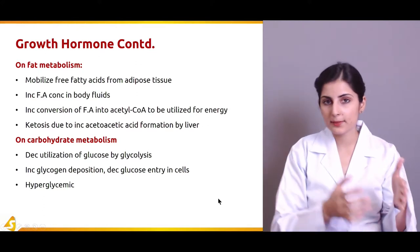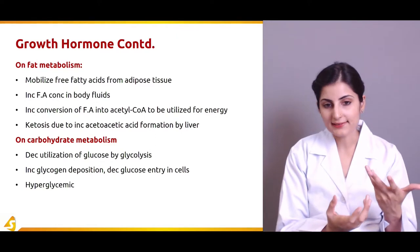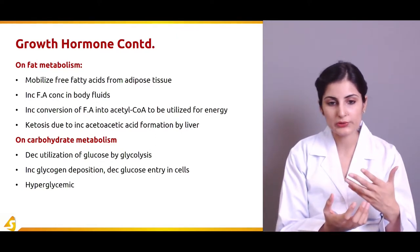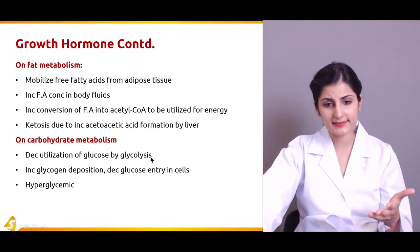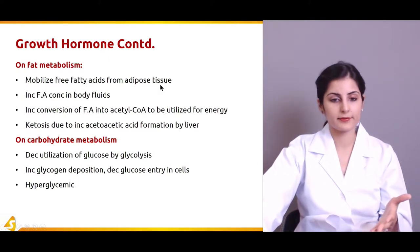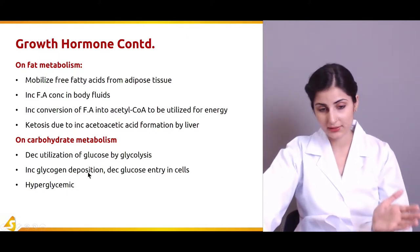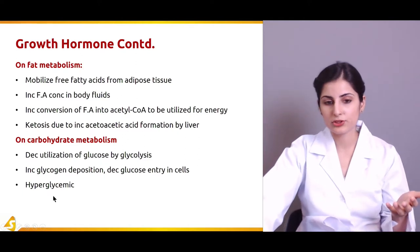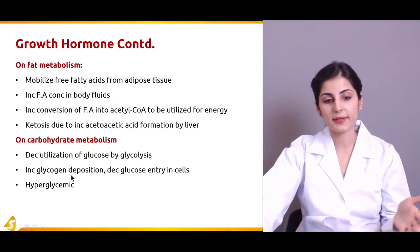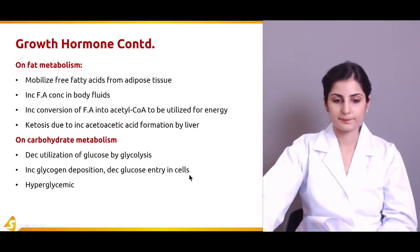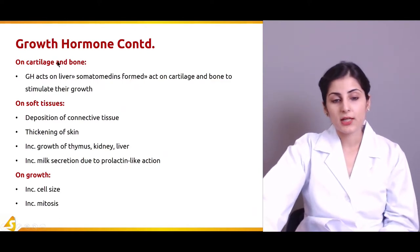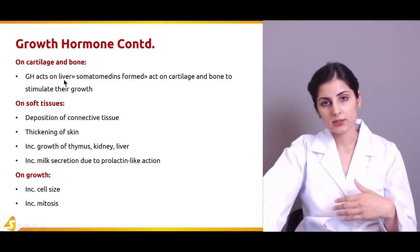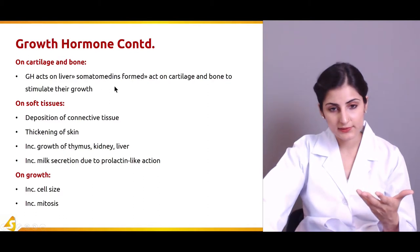Growth hormone increases protein synthesis, mobilizes fatty acids from adipose tissue, and decreases the utilization of glucose by glycolysis. On carbohydrate metabolism, it has a hyperglycemic effect — it increases glycogen deposition because it decreases the breakdown of glycogen and the utilization of glucose. It decreases glucose entry into cells. Growth hormone also acts on the liver and signals it to produce proteins known as somatomedines, which act on cartilage and bone to stimulate their growth.